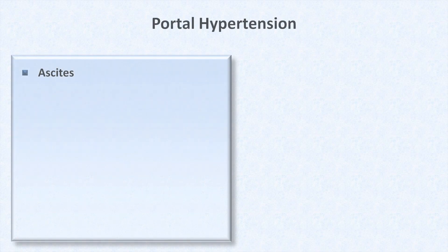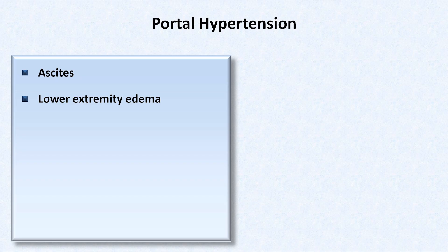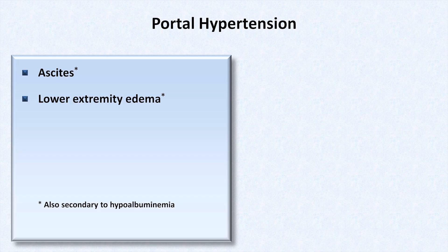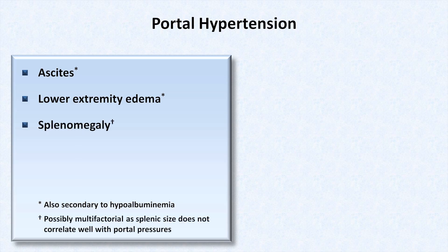Moving back to other findings attributable to portal hypertension, there is lower extremity edema, which forms for much of the same reason as ascites, including a contribution from hypoalbuminemia. These two findings usually coexist in cirrhosis. Finding ascites in the absence of lower extremity edema should be a trigger to search for another etiology, such as an intra-abdominal malignancy. There is also splenomegaly, though its development may be multifactorial as splenic size does not correlate well with portal pressures. Palpation for splenomegaly is much more reliable than percussion.